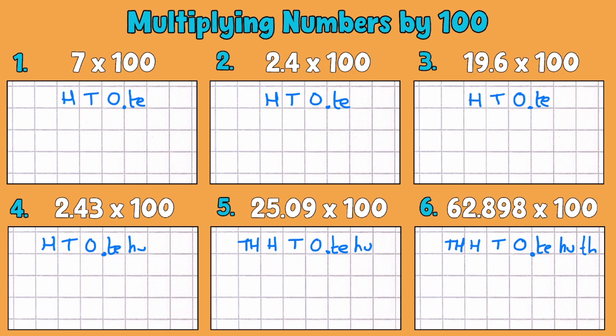So let's write in our first example which is seven. Now just using our known facts we know that seven a hundred times bigger is seven hundred, but let's see exactly what's going on here. So if we put our decimal place in and seven is the same as seven and no tenths.